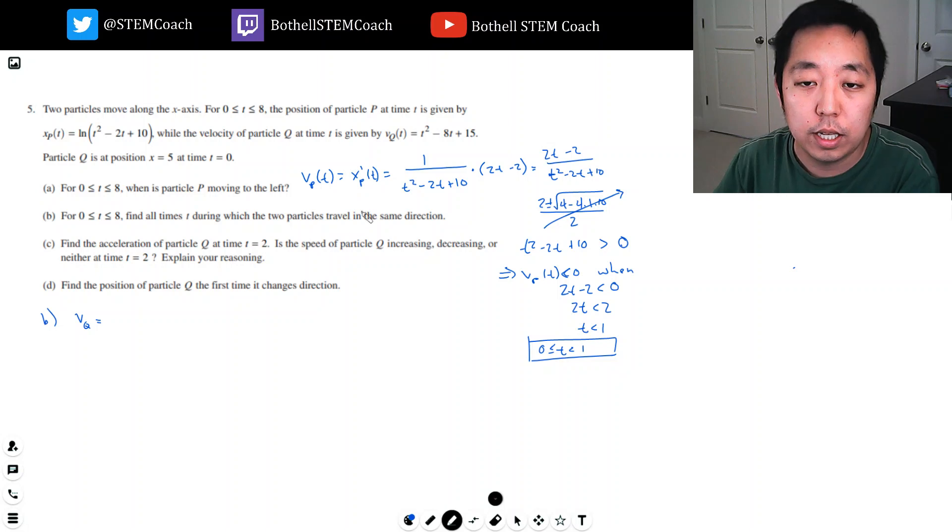So I need to know when vq is positive or negative. Vq is equal to t squared minus 8t plus 15. But I can factor this. I think t minus 5 times t minus 3. Okay, now when t... so if t is bigger than 5, so the crossings are at 3 and 5. So really it's 0 at 3 and 5.